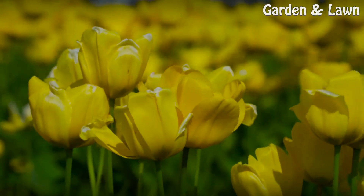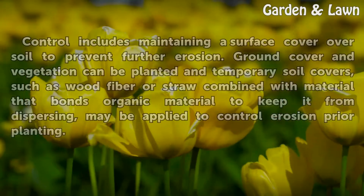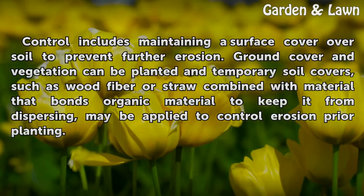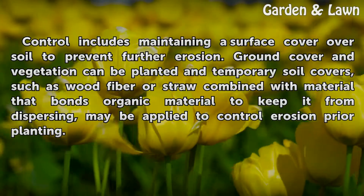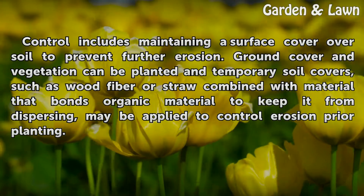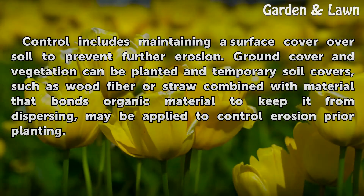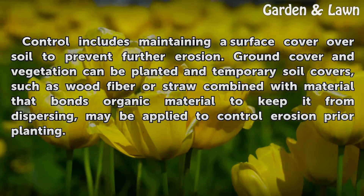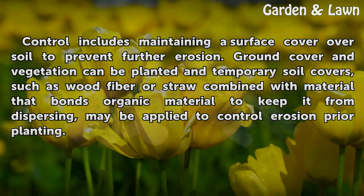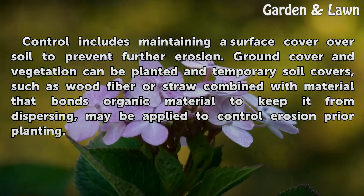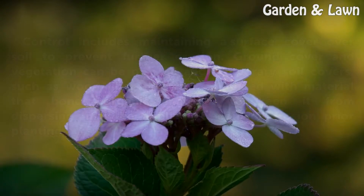Solutions. Control includes maintaining a surface cover over soil to prevent further erosion. Ground cover and vegetation can be planted in temporary soil covers, such as wood fiber or straw combined with material that bonds organic material to keep it from dispersing, may be applied to control erosion prior to planting.